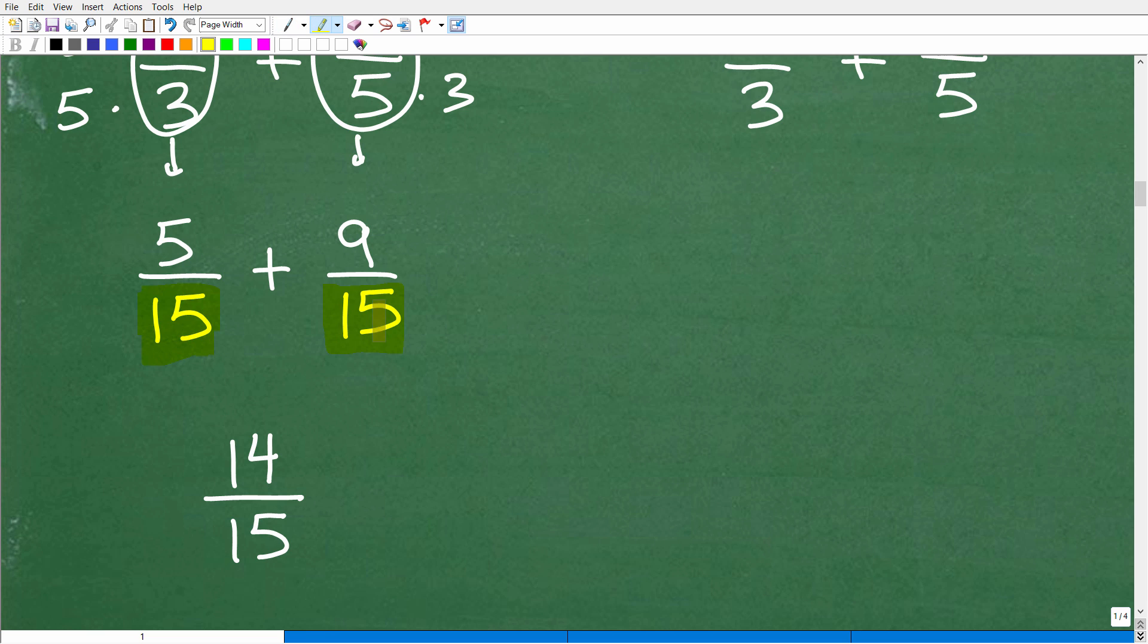Now I can go ahead and add this. So how do I add fractions when the denominators are the same? Well, I just keep one of the denominators and add the respective numerators. So that's 5 + 9 is 14. That is the answer.